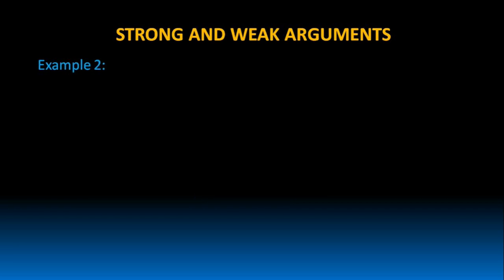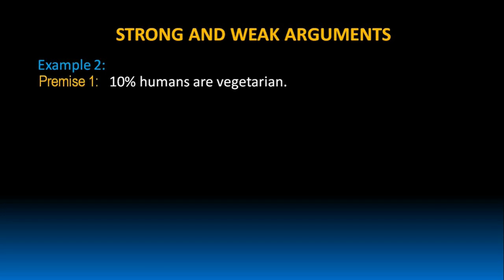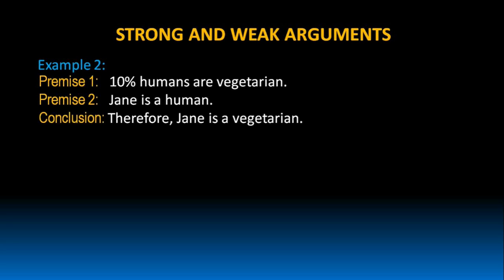Let us try to look at one more example. 10% humans are vegetarian. Jane is a human. Therefore, Jane is a vegetarian.